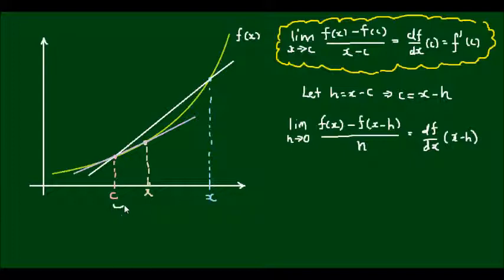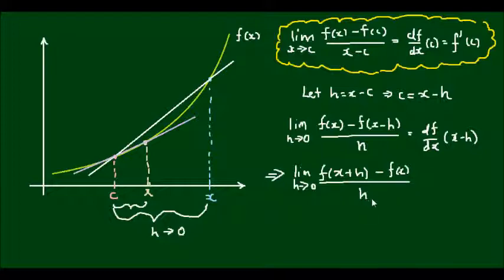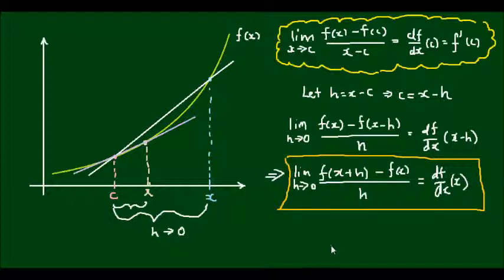So note on this diagram, this distance would be h. This is not the way it's commonly written though. It's more commonly written as the limit as h approaches 0 of f(x plus h) minus f(x) all over h equals the differential of f at the point x. So this is the formula for differentiating any function by first principles.